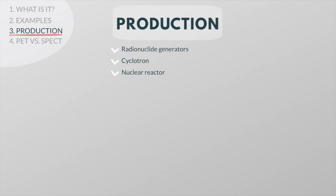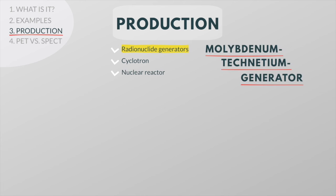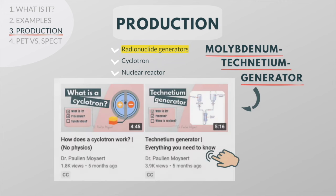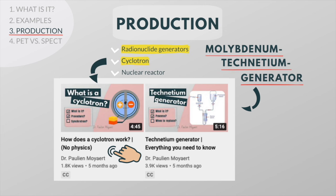There are different methods for producing radioactive tracers. We can use radionuclide generators, a cyclotron, or a nuclear reactor. By far the most important generator for radiopharmaceutical preparation is the molybdenum-technetium generator, often referred to as a technetium generator. If you want to know more about how radioactive tracers are produced, I recommend watching my videos about the technetium generator and the cyclotron.